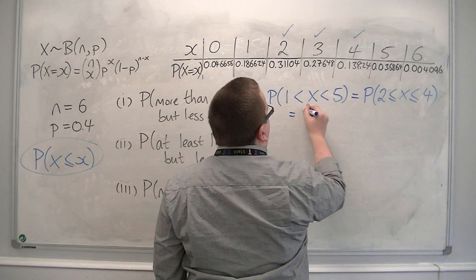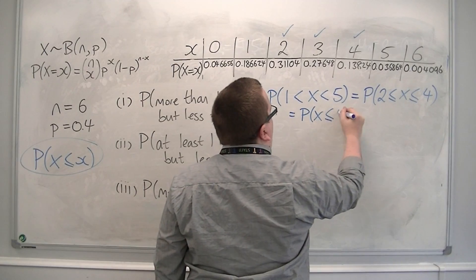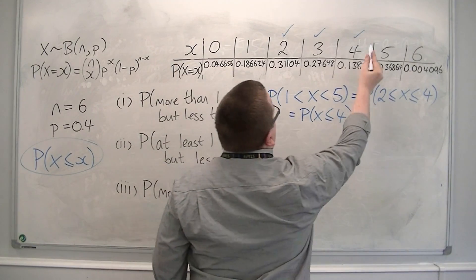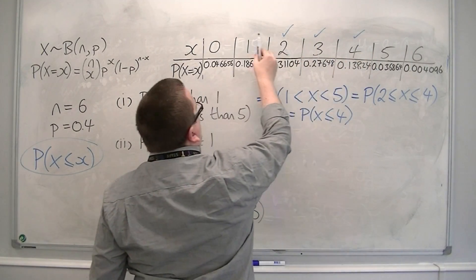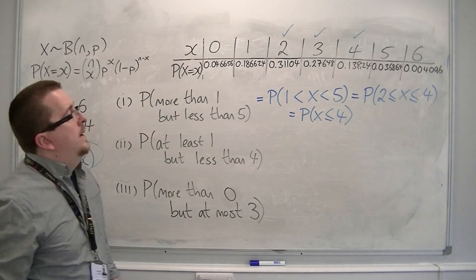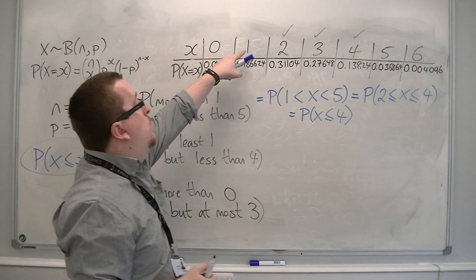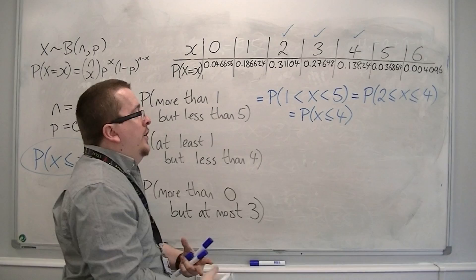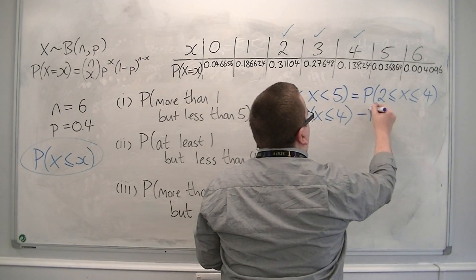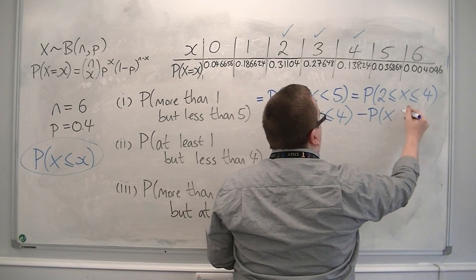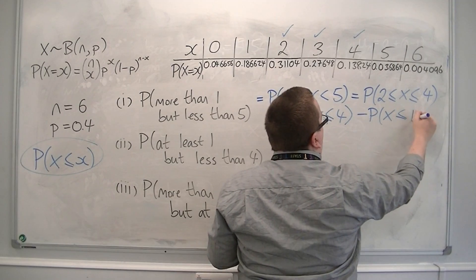Well, I can calculate x is less than or equal to four, because that gives me four, three, two, one, and zero. But it gives me the zero and one which I don't want. So I'm going to subtract one and zero by subtracting x is less than or equal to one.